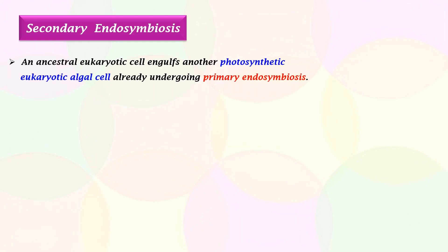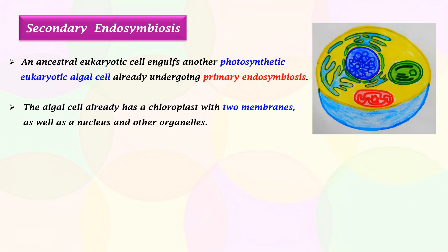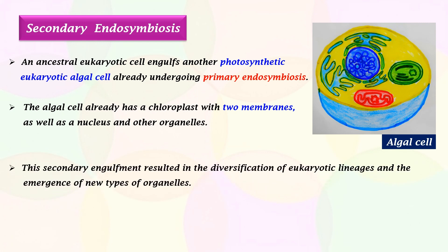Secondary Endosymbiosis. An ancestral eukaryotic cell engulfs another photosynthetic eukaryotic algal cell that is already undergoing primary endosymbiosis. The algal cell already has a double-membraned chloroplast, as well as a nucleus and other organelles. This secondary engulfment resulted in the diversification of eukaryotic lineages and the emergence of new types of organelles.